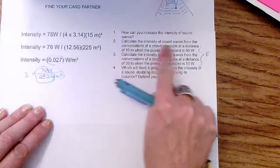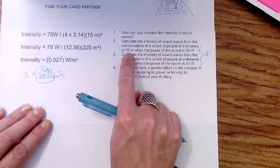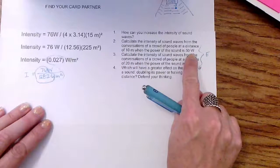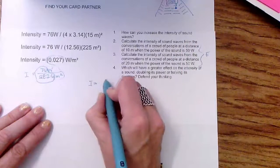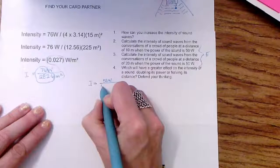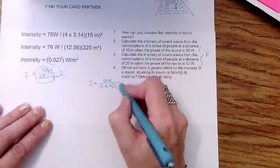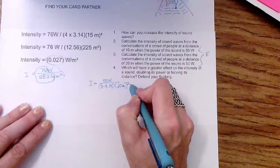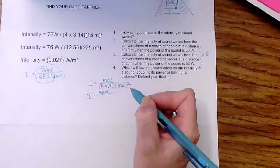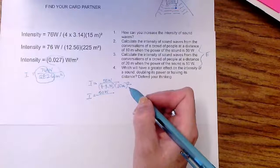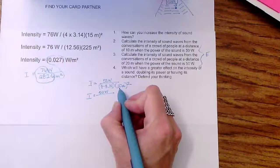I have to calculate the intensity of the sound waves from a conversation of a crowd of people who are about 10 meters away. The power of the sound is 50 watts. So if I use my equation, I can see that intensity is equal to power over 4 times pi, which is multiplied by the distance squared. This is the same as saying 50 watts is over 12.56 multiplied by the square of 10, which I know to be 100. 10 times 10 is 100 meters squared.